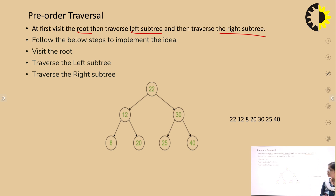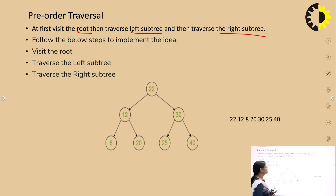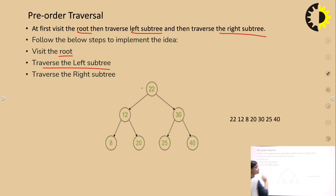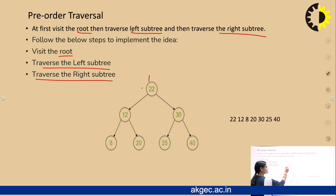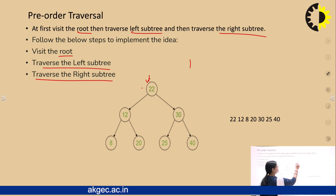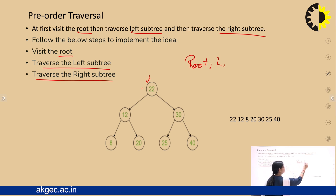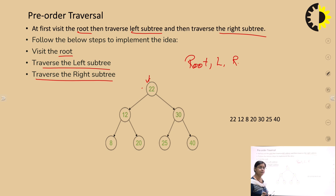We have to keep this in mind. The steps to follow for preorder traversal are: first, visit the root node; then traverse to the left subtree; then traverse to the right subtree. Now we will see how the nodes are traversed. The root node is 22, and we follow the rule of root, left, right for preorder traversal.